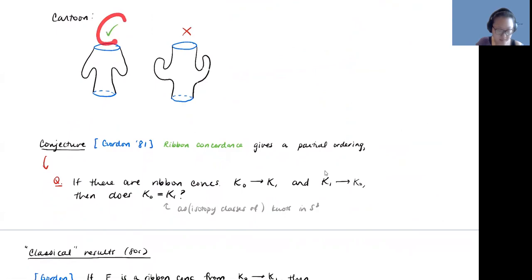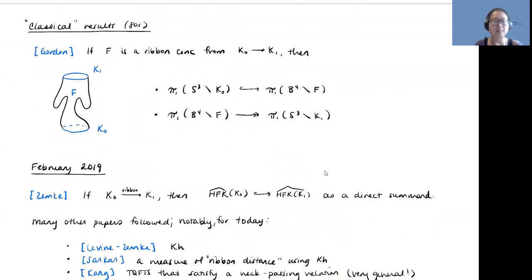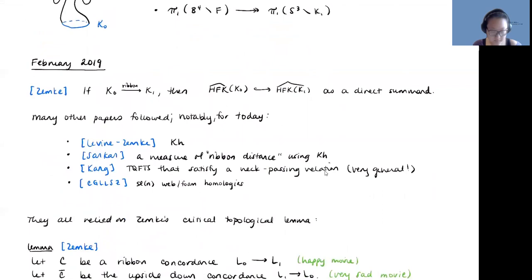There are some classical results. So Gordon proved that if you think about their pi one and you have a ribbon concordance, then the following is true. You have these kinds of facts. There's some sort of injection here into pi ones, and then there's some kind of projection here. So whenever you know something about ribbon concordances, you can use it as an obstruction. So if you can just look at an example and say that one of these is not true, like maybe this guy is way too big compared to this, then you know that there isn't a ribbon concordance.